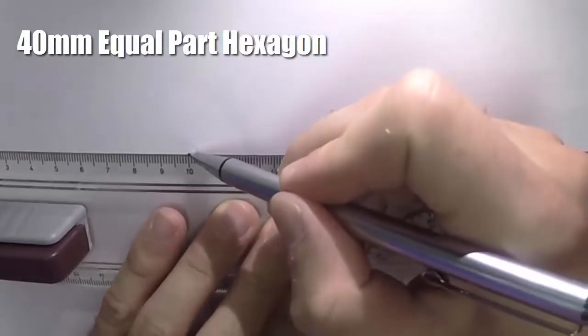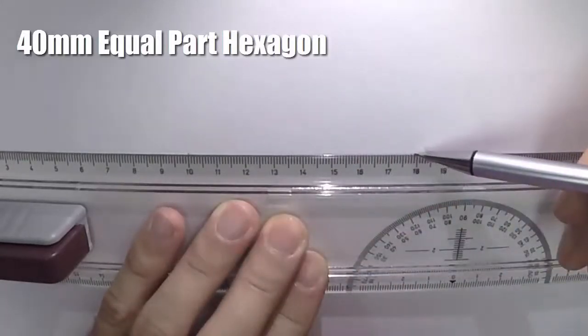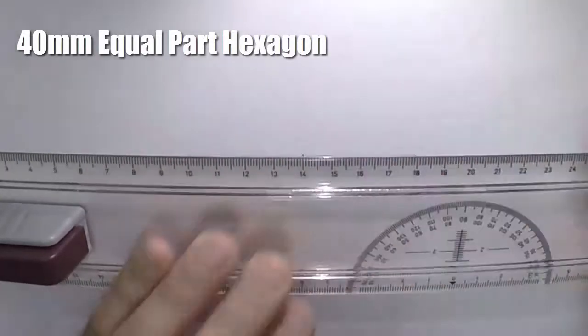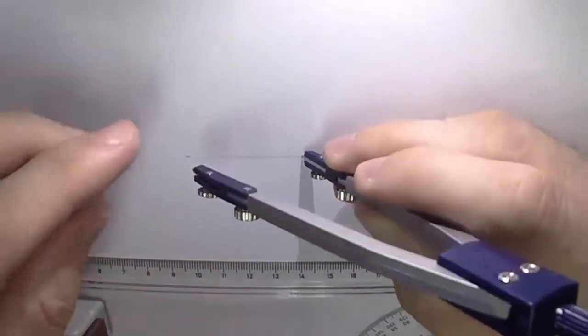The first thing you need to do is measure and find the midpoint of where you want this hexagon to be. In my case it's going to be 40mm.